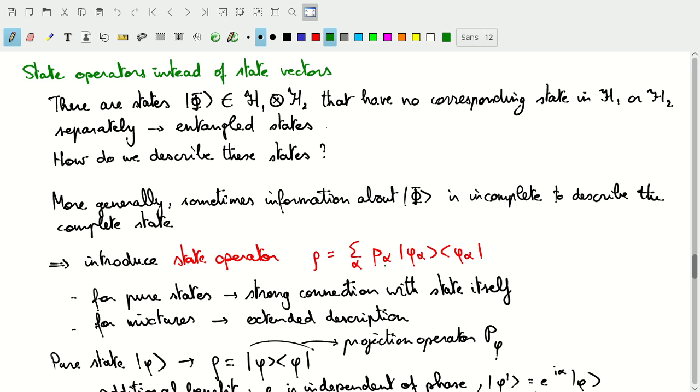For example, what if I have 50% probability of starting from a plus state in a spin 1 half system and 50% probability of having a minus state. Then we'd find 1 half plus plus plus 1 half minus minus.